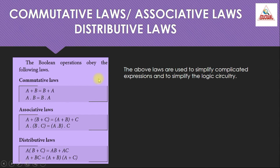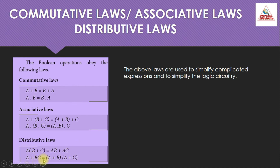Boolean operations also obey the following laws: commutative laws, associative laws, and distributive laws. Commutative laws: a+b = b+a and a·b = b·a. Associative laws: (a+b)+c = a+(b+c) and (a·b)·c = a·(b·c). Distributive laws: a·(b+c) = ab+ac and a+(b·c) = (a+b)·(a+c). These laws are used to simplify complicated expressions and logic circuitry.